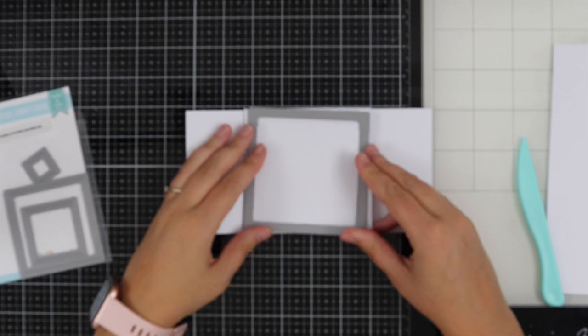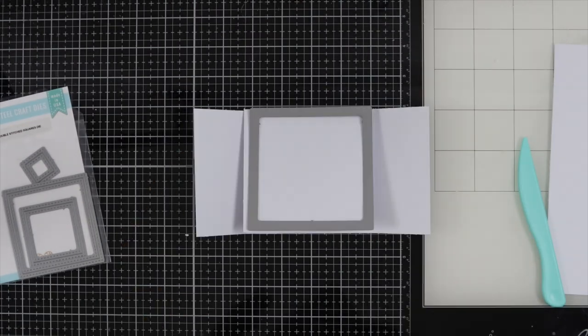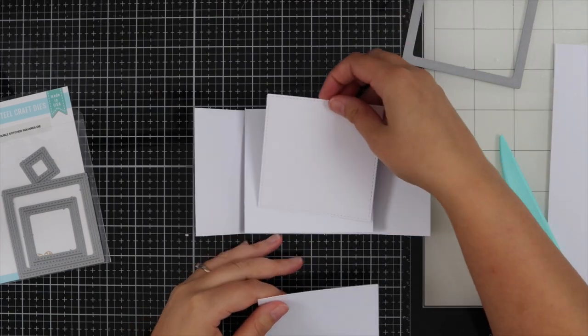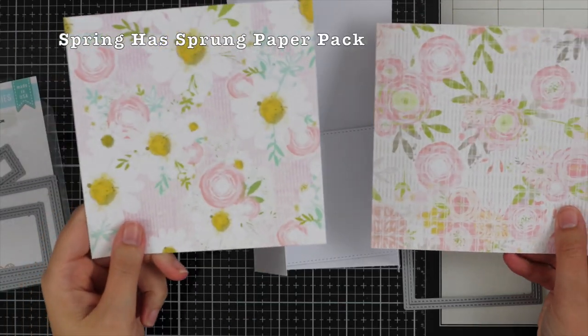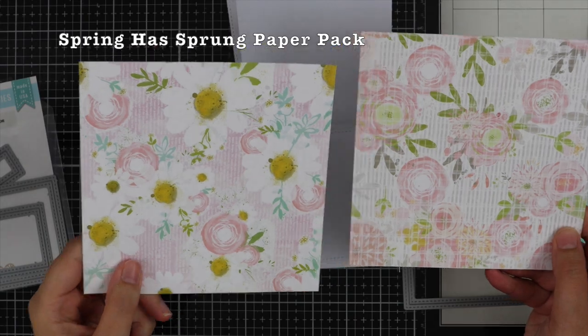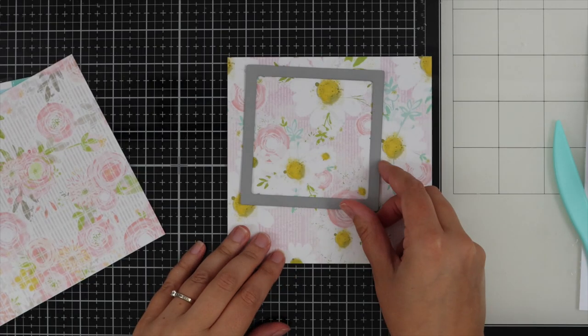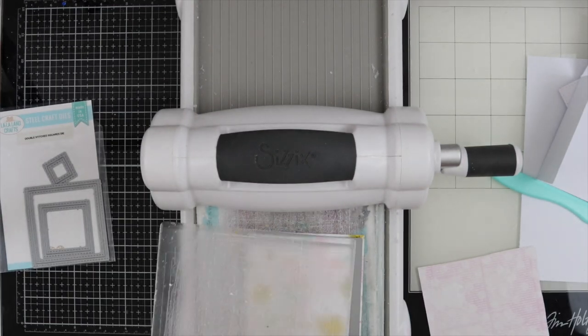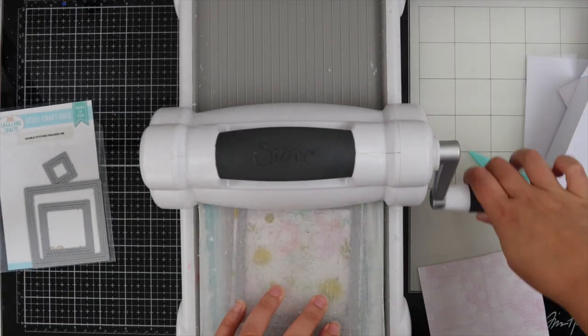Next I'm going in with the double stitched squares die to die cut two pieces of white card. I ended up swapping this for some paper, using the Spring Has Sprung paper pack to die cut two pieces.